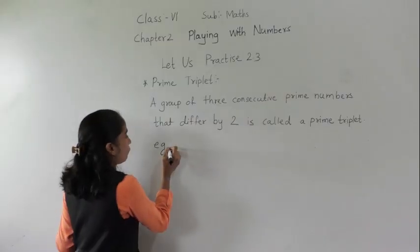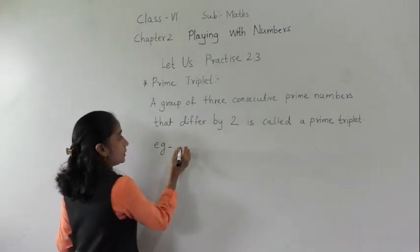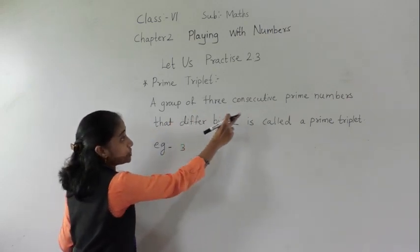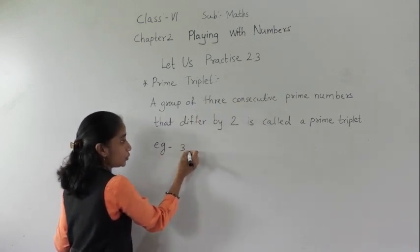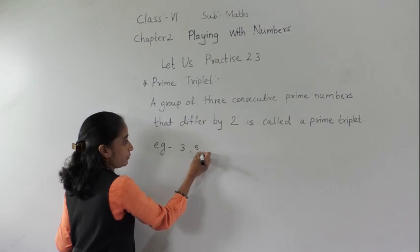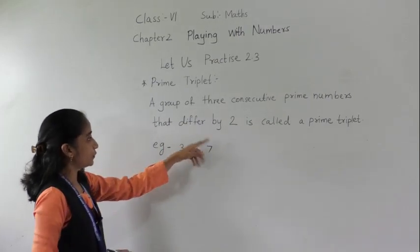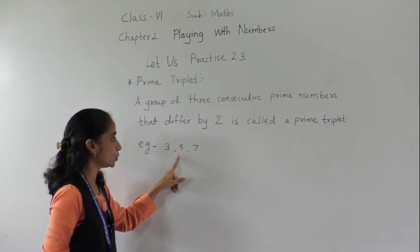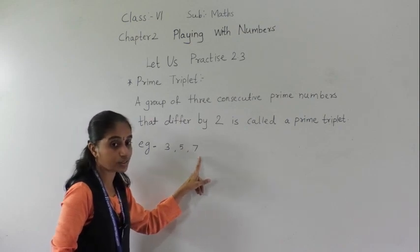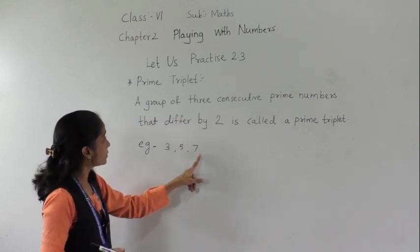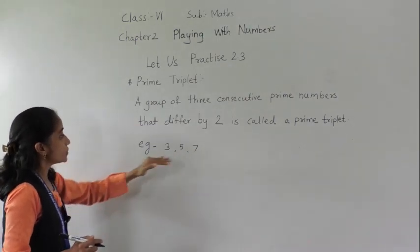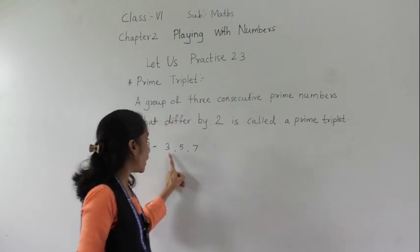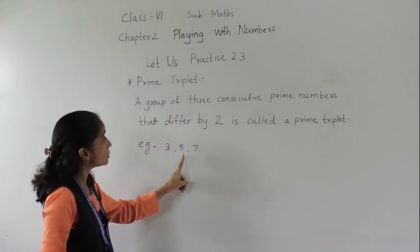Now what is an example of a prime triplet? A prime triplet is a group of three consecutive prime numbers — three, five and seven — that differ by two. The difference between three and five is two, and the difference between five and seven is also two. So these numbers are called a prime triplet.